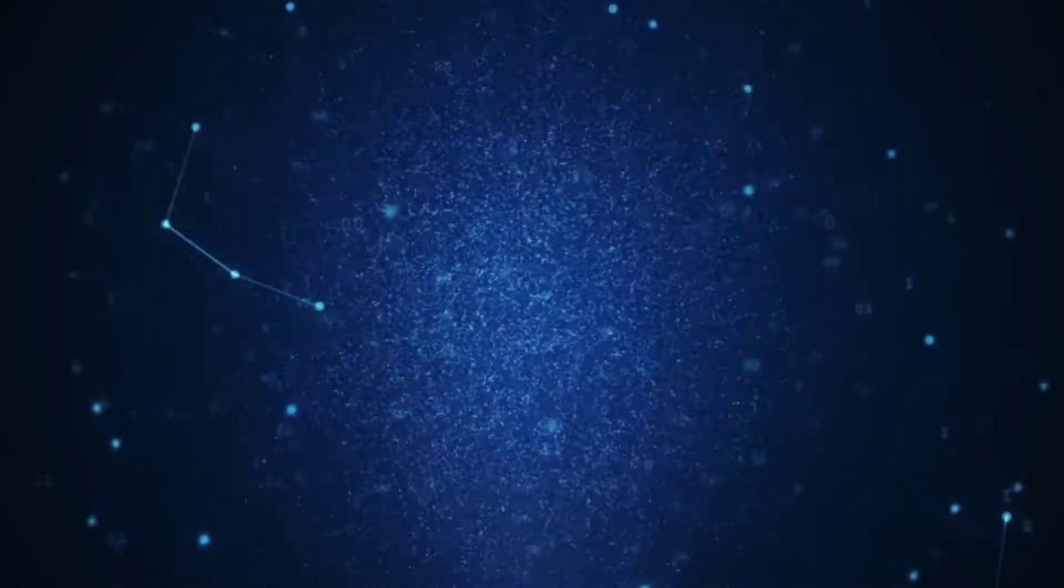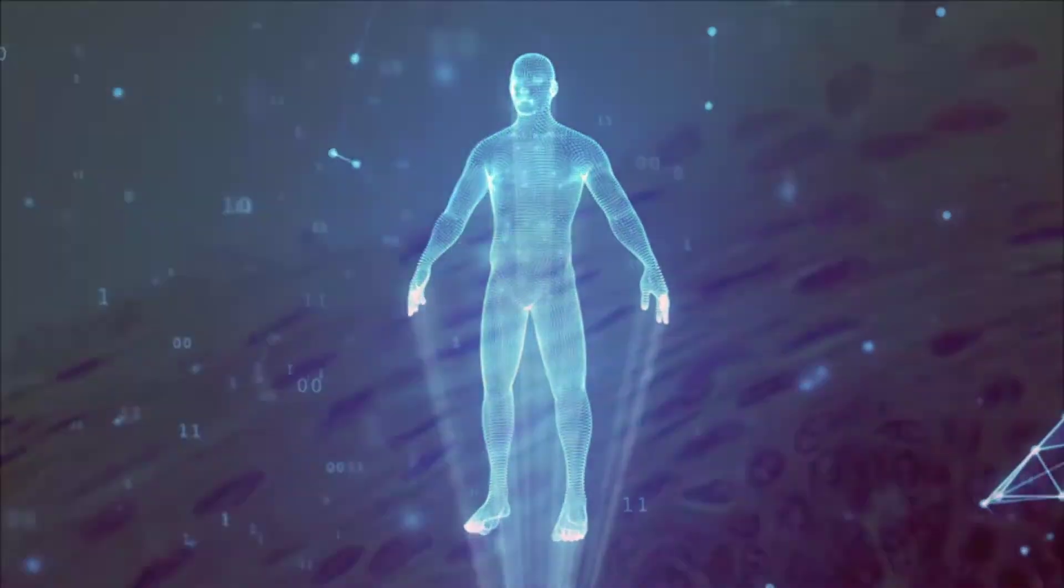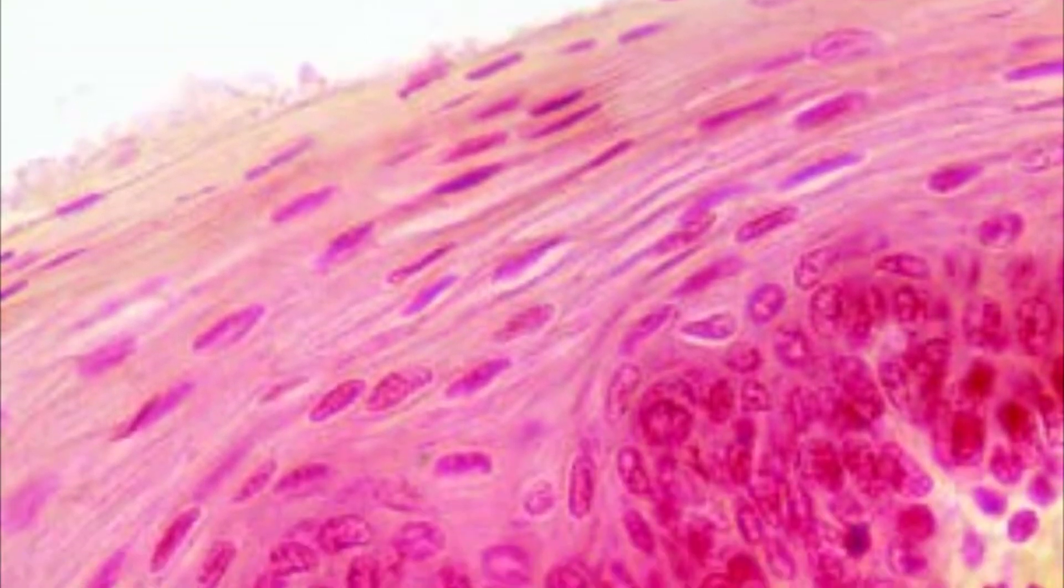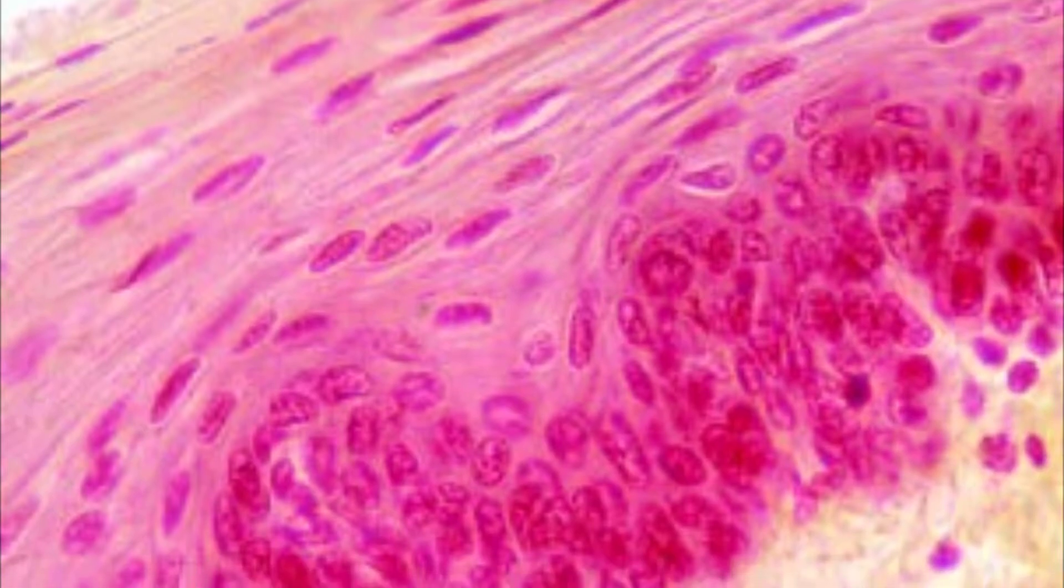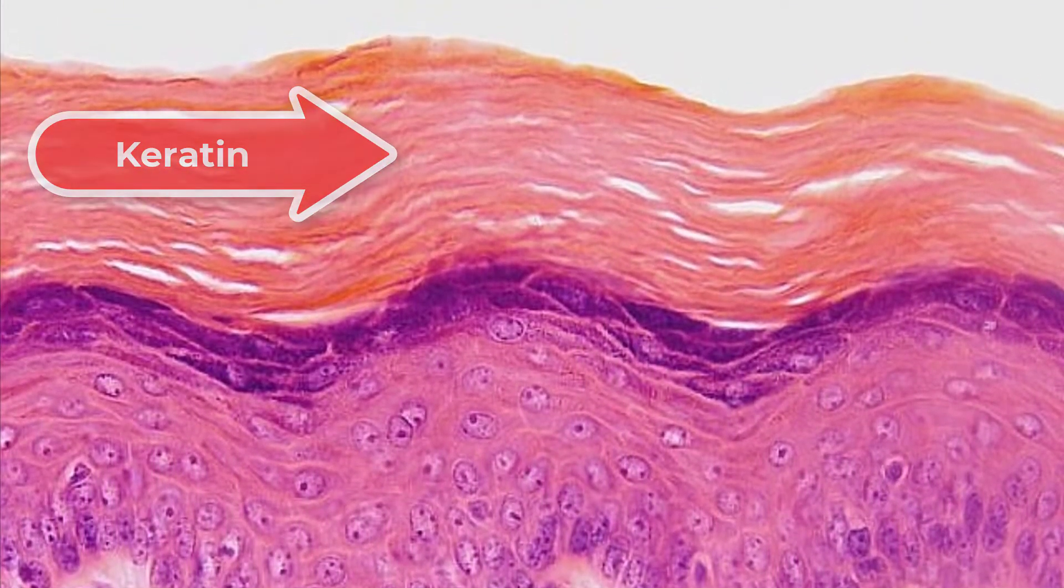Stratified squamous epithelium is the most common type of stratified epithelium in the human body. The apical cells are squamous, whereas the basal layers either contain columnar or cuboidal cells. The top layer may be covered with dead cells filled with keratin.